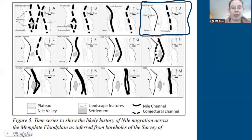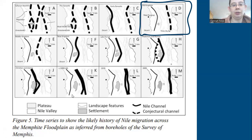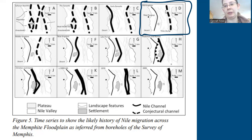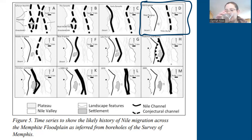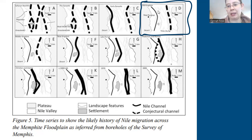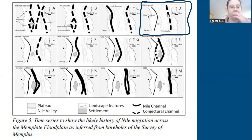This is a graphic we've seen before about the general history of the Nile and how it migrated over time. I've circled a portion here because this is particularly how things might have looked in the Old Kingdom — the main Nile channel here, and a possible Nile channel that once existed but is no longer there.